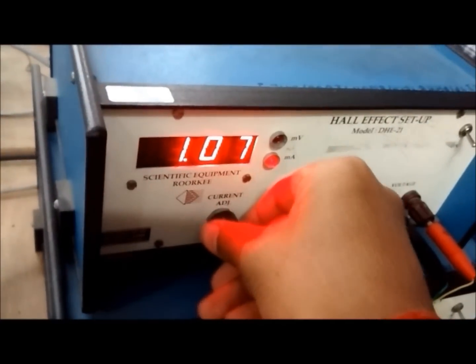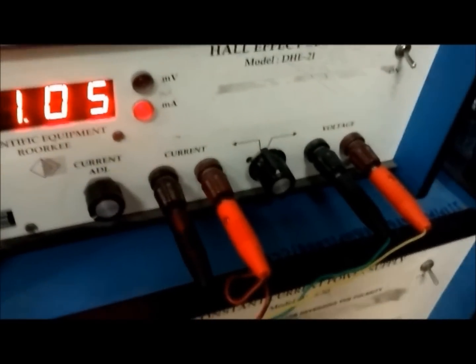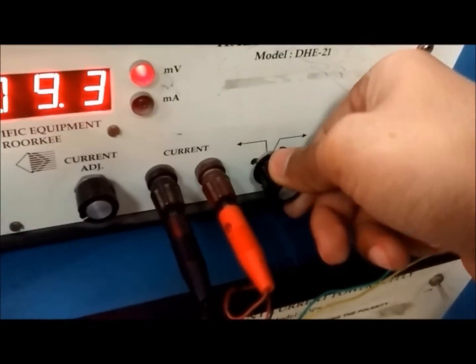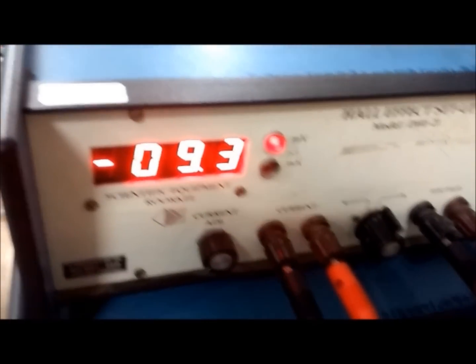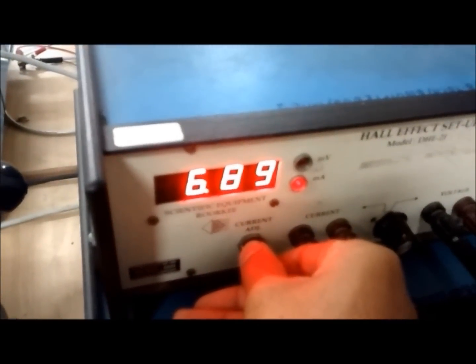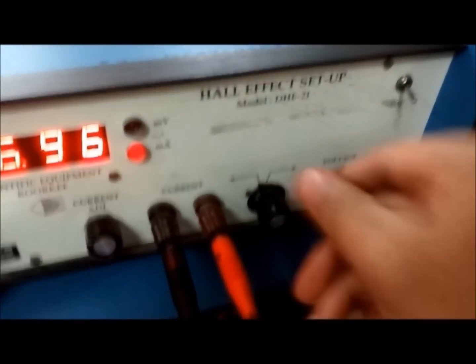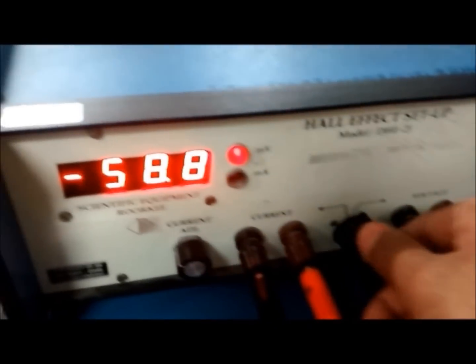Then vary the current from 0.5 mA to 1 mA and find the corresponding voltage for it. Similarly, vary current by 0.5 mA each time till it reaches 7 mA and note down the corresponding voltages in the observation table.